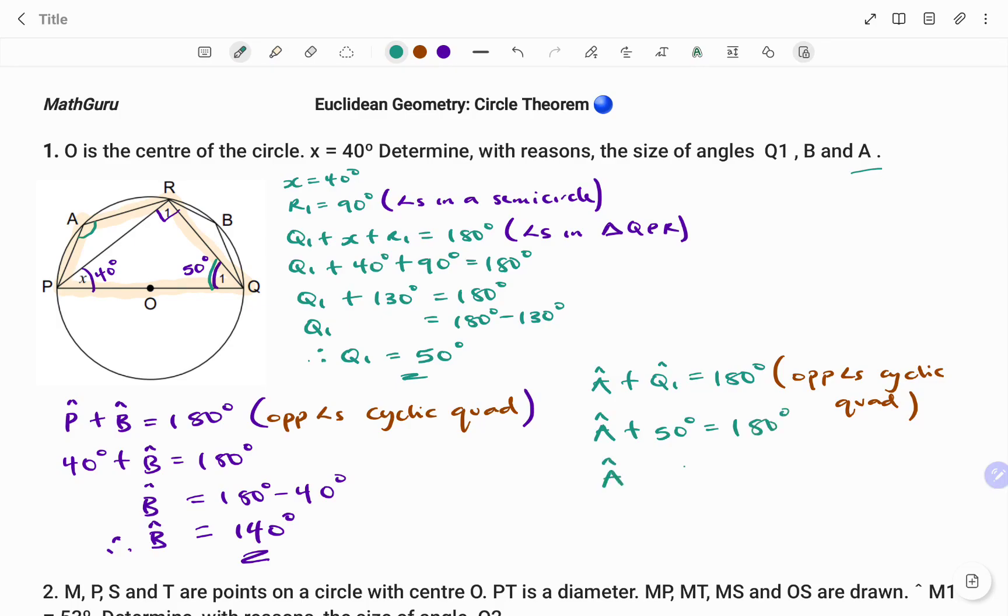Therefore, to find angle A, I'm going to move my 50 to the right-hand side, and that becomes 180 minus 50 degrees. Therefore, the value of angle A equals 180 minus 50, that's 130 degrees. Let's look at a second example.